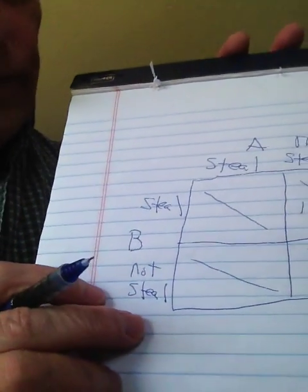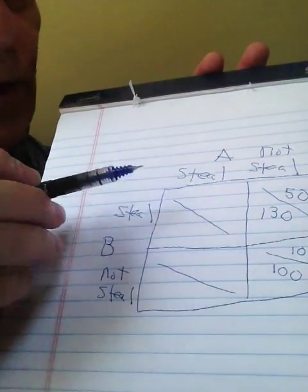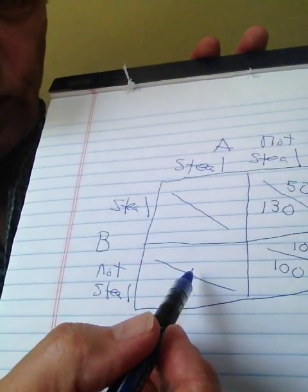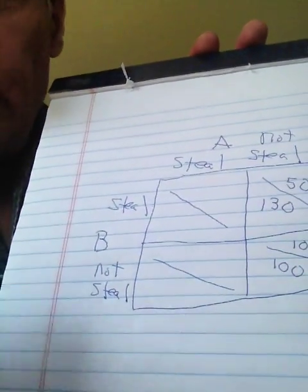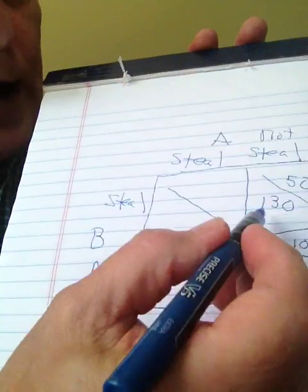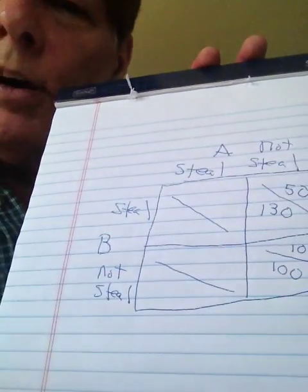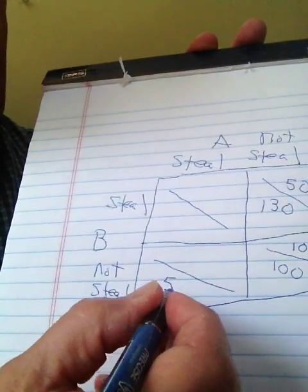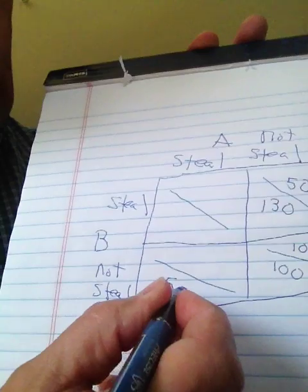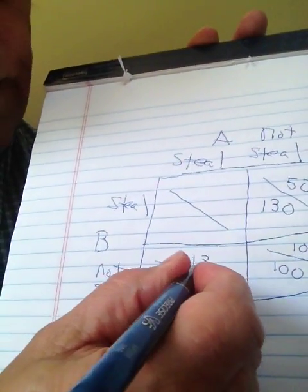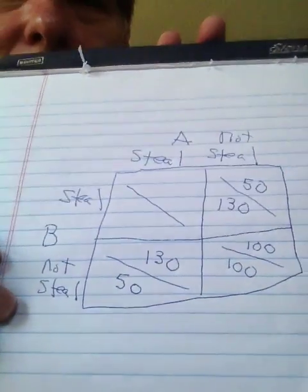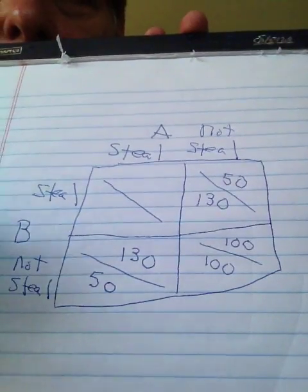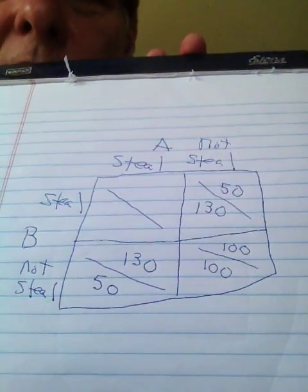Now let's go to the opposite scenario, where Mr. A decides to steal and Mr. B decides not to steal. By the same assumptions about the cost of stealing, this is the exact mirror: Mr. B winds up with $50, and the stealing Mr. A winds up with $130. We're almost done with the payoff matrix now. Let me make a new video starting right here.